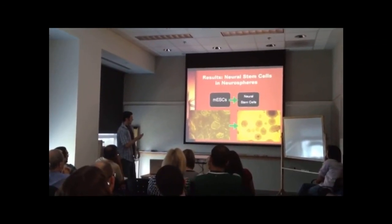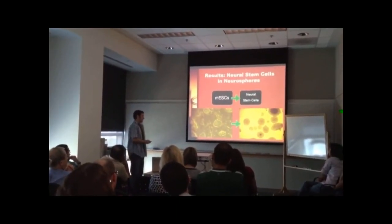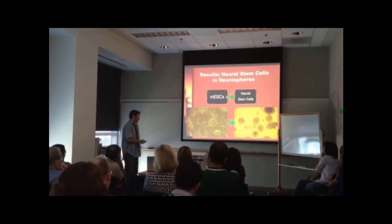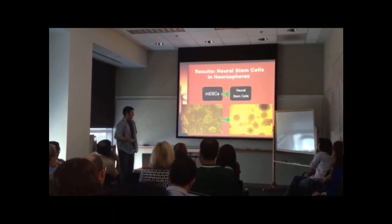After changing the media and adding morphogens, the stem cells are then driven to neural spheres, which should express neural stem cells. These neural spheres are aggregates of stem cells, some of which should be neural stem cells.